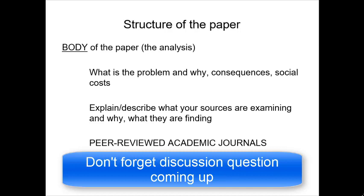Probably one of the most important parts of this entire assignment is learning how to use peer-reviewed academic journals. This is where scientific information gets published — it's different from the news. The news tells us what's happening, while peer-reviewed academic journals are where studies get published and the scientific method is used. I've also got another video on how to access these peer-reviewed academic journals.